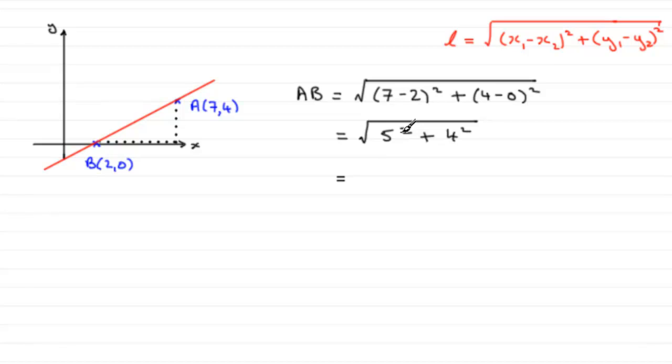Anyway, if you work that out, we've got root of 25 plus 16, which is the square root of 41. And that can't be broken down any further. There is no square number that's a factor of 41. So, I would just leave it like that.